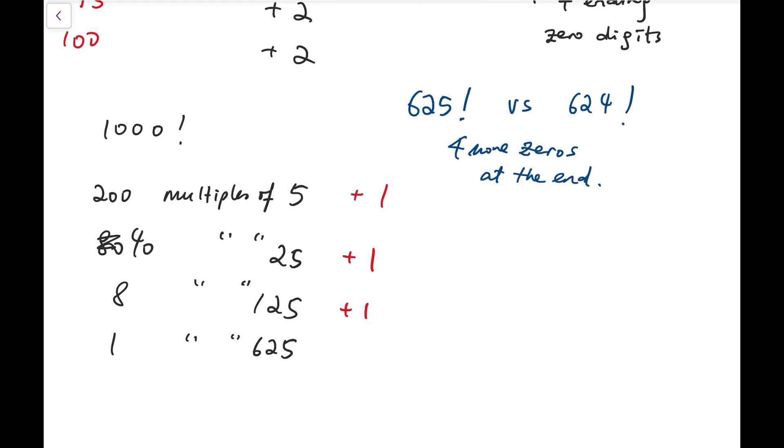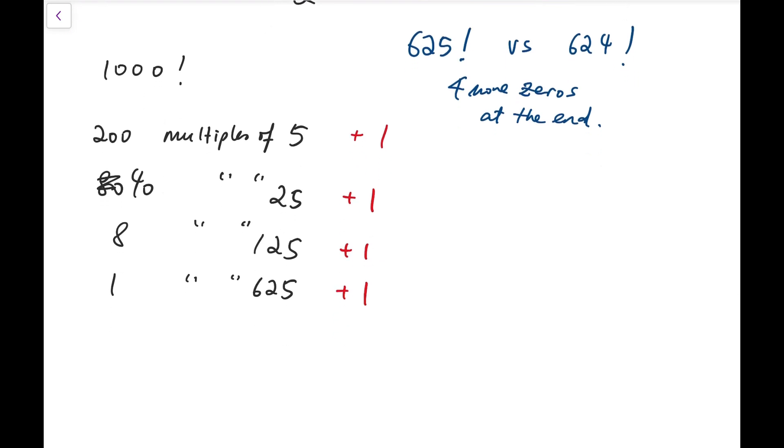And then similarly, I again add 1 whenever I meet a multiple of 125, because we have counted two of them already, two out of three. And finally, when I come to number 625, I add 1 extra more ending zero digit. So altogether, the final answer should be 200 plus 40 plus 8 plus 1, which is 249.